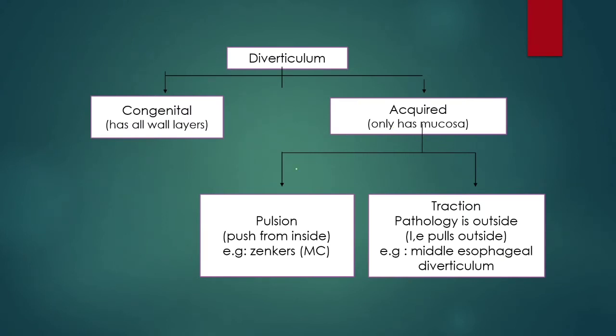What are the types of acquired diverticulum? It has pulsion and traction types. Pulsion means there is increased intraluminal pressure — an example is Zenker's diverticulum. In traction diverticulum, the pathology is outside — it pulls outward — and an example is middle esophageal diverticulum. In congenital diverticulum, it has all wall layers, whereas in acquired, it has only mucosa.